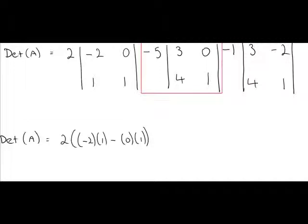Moving on to the middle part of the equation. We've minus 5. Now, the determinant of this 2 by 2 is AD, so it's 3 by 1. Minus B, which is 0, by C, which is 4.